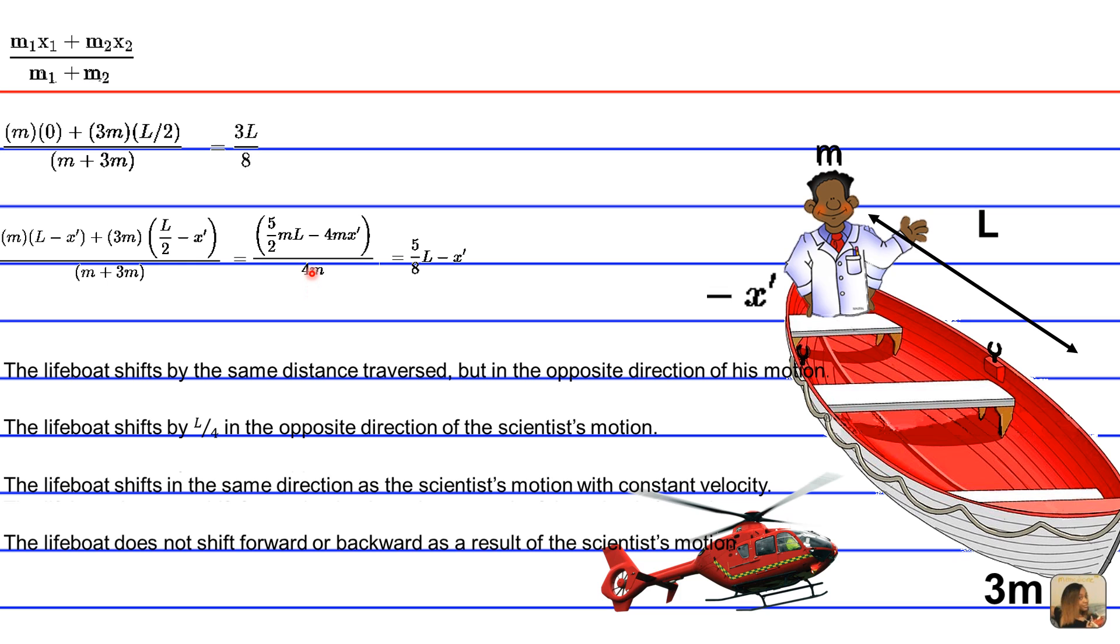And so what we can now do to make this easier is distribute the 1 over 4m to both terms. And when we do that, the m's cancel out. And we get 8 in the denominator. And when we do that over here, the m also cancels out. So that's why we're left with 5 over 8L minus x prime.